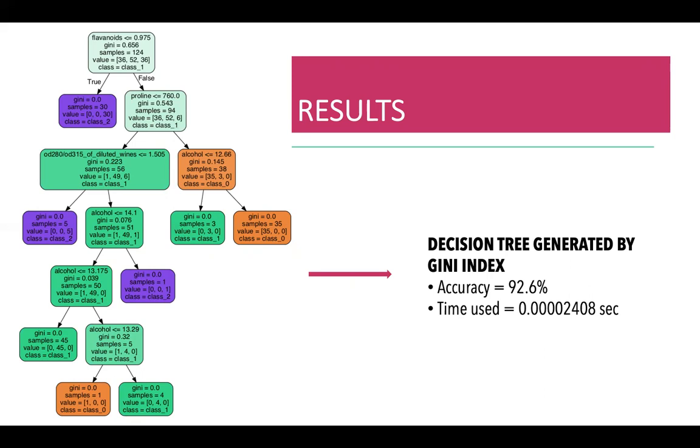After we have obtained the tree, we used it to predict the wine classes of the testing data. This particular decision tree was 92.6% accurate at predicting the classes of the testing data, and the time it used was 0.00002408 seconds.